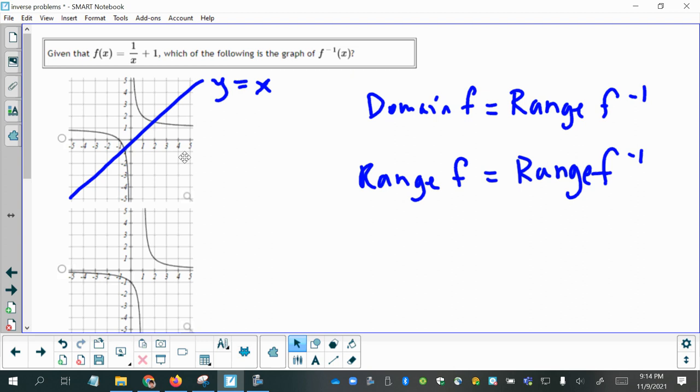and then imagine what it would look like reflected across that line, and that might help you quickly identify the answer. I also happen to know that this given f of x is a transformation of the parent function, the reciprocal function.